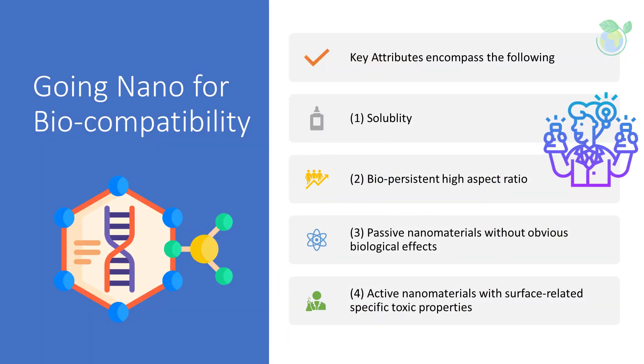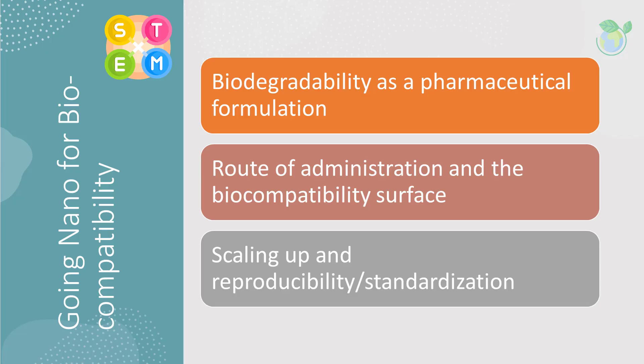Key attributes encompass the following: being soluble, adopting biopersistent high aspect ratio, having passive nanomaterials without obvious biological effects, or active nanomaterials with surface-related specific toxic properties, as a simplified classification. Other concerns when considering nanomaterial use in a biomedical context include biodegradability, which applies to the biodegradable nature of the nanomaterial in the human body. Biodegradable nanomaterials will be eliminated from the human body and should not remain beyond their intended application. Route of administration and the biocompatibility surface are also being assessed, because even using the same nanomaterials, when applied dermally or intravenously, can pose different risks to the immune system.